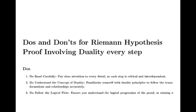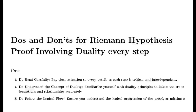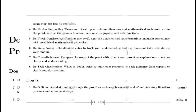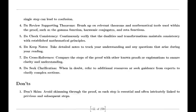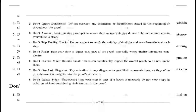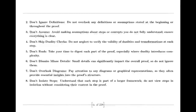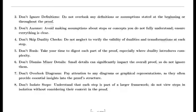Euler also tackled the Basel problem, which was concerned with finding the exact sum of the reciprocals of the squares of the integers. By examining the sine function and its product representation, Euler derived a formula for this sum. He showed that the sum of these reciprocals is equal to π²/6. This result was a significant achievement in mathematics and highlighted Euler's ability to uncover connections between different mathematical concepts.